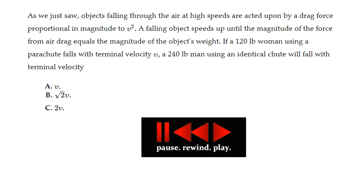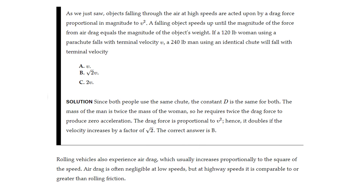Here's a problem to consider. Objects falling through air at high speed experience a drag force proportional in magnitude to v squared. A falling object speeds up until the air drag equals its weight. If a 120-pound woman using a parachute falls with terminal velocity v, a 240-pound man using an identical chute will fall with which terminal velocity? Since both use the same chute, D is the same, but the man's mass is twice the woman's, requiring twice the drag force. Since drag is proportional to v squared, the velocity must increase by a factor of square root of 2. The answer is v times the square root of 2.